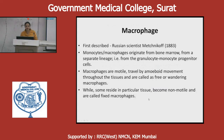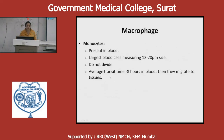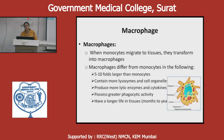Macrophages were described by the Russian scientist Metchnikov. Monocytes and macrophages originate from bone marrow from a separate lineage, forming granulocyte-monocyte progenitor cells. Macrophages are motile, traveling by amoeboid movement throughout tissues as free or wandering macrophages, while some reside in a particular tissue as fixed macrophages. Monocytes in blood are the largest cells, averaging 8 hours in blood before migrating to tissues and developing into macrophages. Macrophages are 5–10 times larger than monocytes, contain more lysosomes and cell organelles, produce more lytic enzymes and cytokines, possess greater phagocytic activity, and have a longer life in tissues.